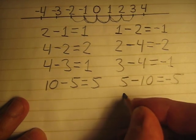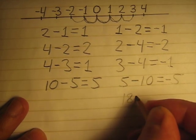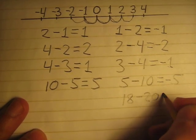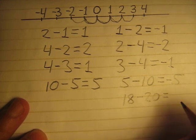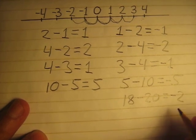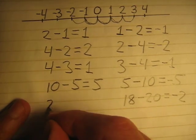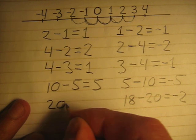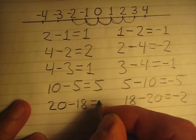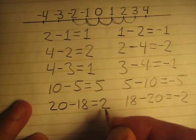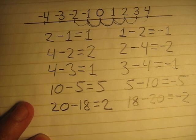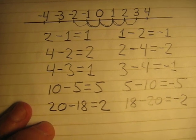How much is 18 minus 20? The answer is negative 2. Because 20 minus 18 equals positive 2, so 18 minus 20 is negative 2.